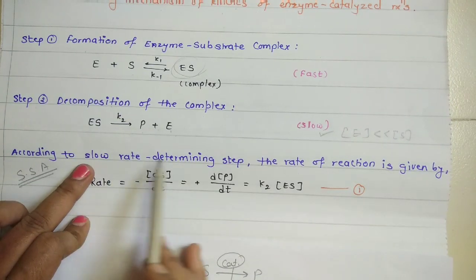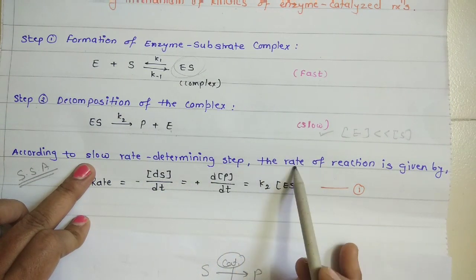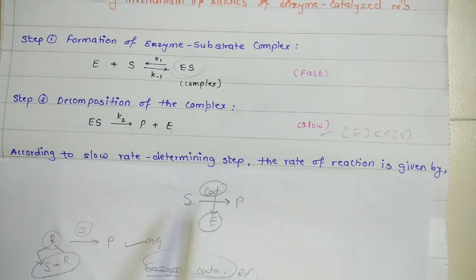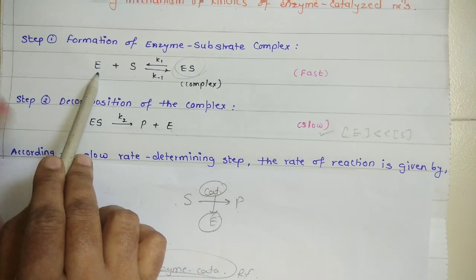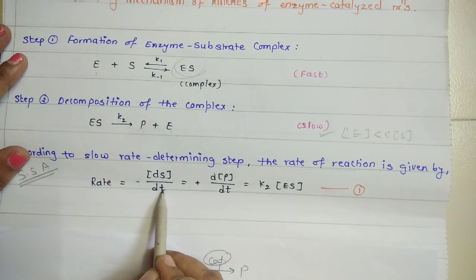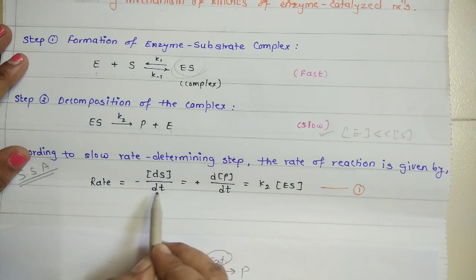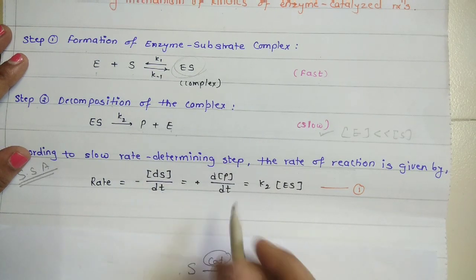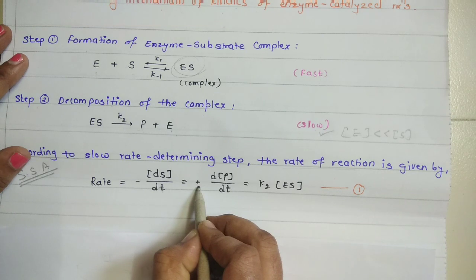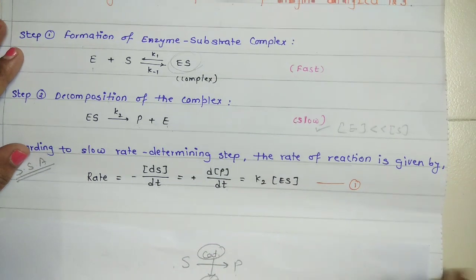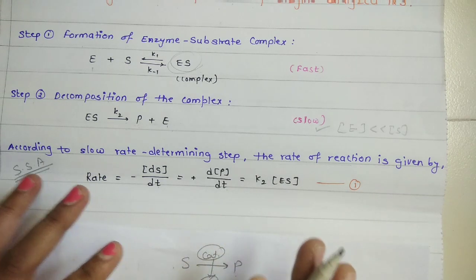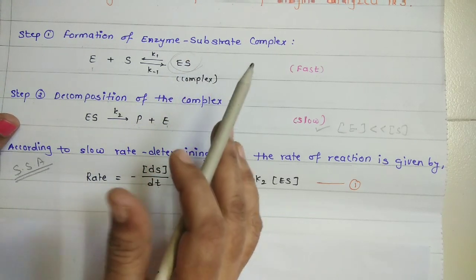According to the steady state approximation, the substrate concentration with respect to time decreases, so the rate of disappearance of substrate is -d[S]/dt. The rate of formation of product is +d[P]/dt, which equals K2 times [ES]. The reason we write K2[ES] is that the short-lived intermediate continuously decomposes in step 2, so equilibrium cannot be observed and the enzyme-substrate complex directly decomposes into product.